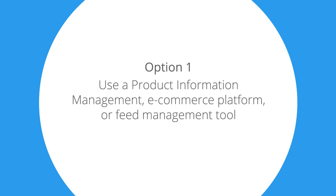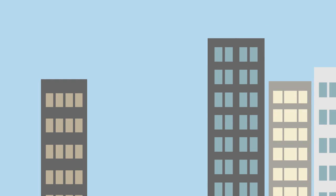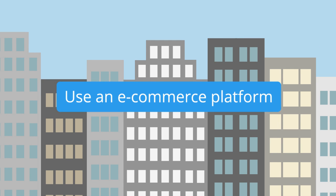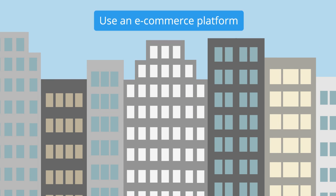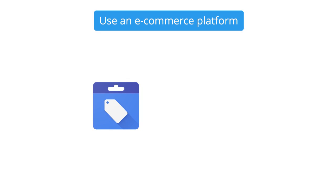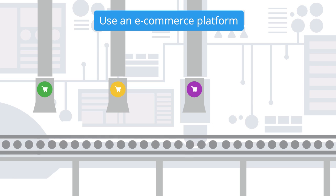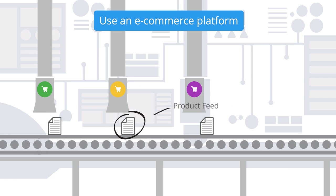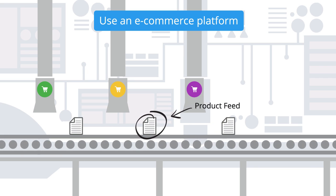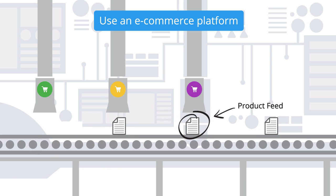Option 1: Use a product information management, e-commerce platform, or feed management tool. Companies that already use e-commerce platforms can look to their platform for the best way to connect with Google Shopping. The same goes for product information management systems or feed management tools. Google also offers a way for several e-commerce platforms to create feeds automatically.